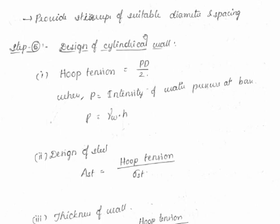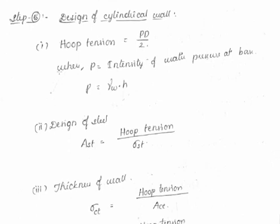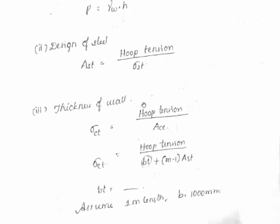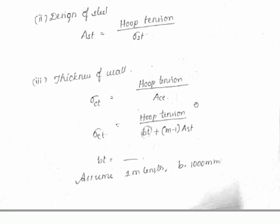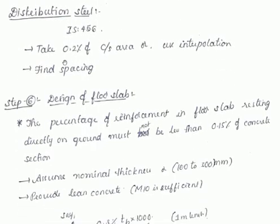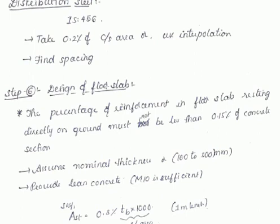Step 5 is to design the cylindrical wall. Hoop tension is again P·D/2, but here P equals γw × h (unit weight of water times height), not T·cosθ as in the ring beam. Area of steel Ast equals hoop tension divided by σst. Thickness of the wall is found from hoop tension divided by equivalent concrete area using the modular ratio m. Distribution steel is taken as 0.2% of the cross-sectional area.